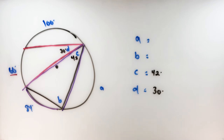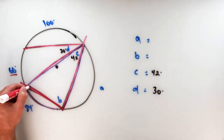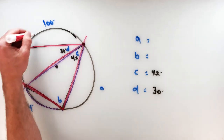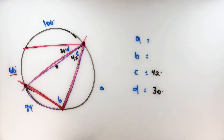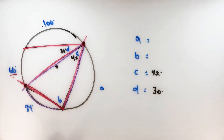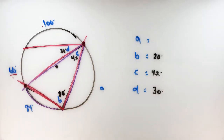Next up is angle B. Extending angle B out to its endpoints on the circle, the intercepted arc is the sum of all arcs in between — we've got a 60 degree arc and a 100 degree arc together, which is 160. The measure of angle B is half of 160, which is 80. So the measure of angle B is 80 degrees.